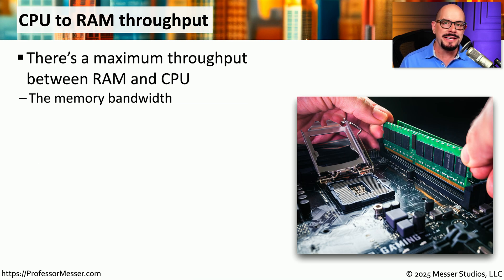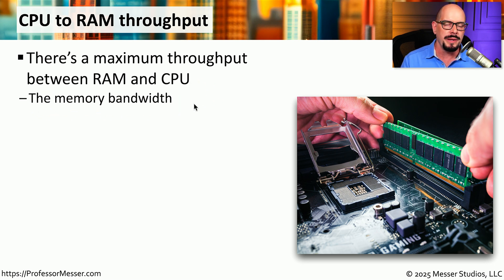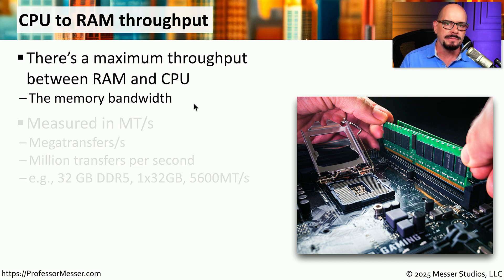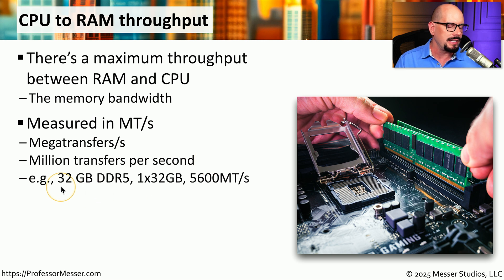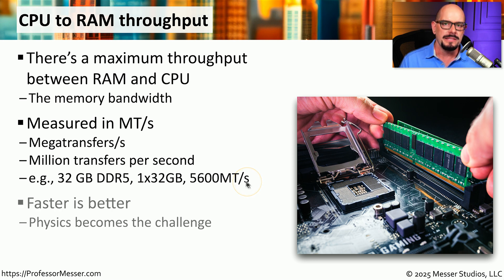If you were to examine the amount of data moving around your computer, you would find an enormous amount of data being transferred between the memory and the CPU. This is what we refer to as the memory bandwidth, and it is an important measurement to determine just how fast your computer is able to operate. We often refer to this data transfer rate in mega transfers, or MT per second, which refers to million transfers per second. A memory module might say it supports 5,600 million transfers per second. If we want to increase the speed of a system, we generally need to increase that data rate between the CPU and the memory.